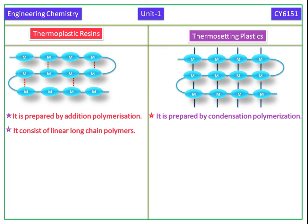Thermoplastics are linear long chain polymers. Thermosetting plastics are three dimensional network structures.